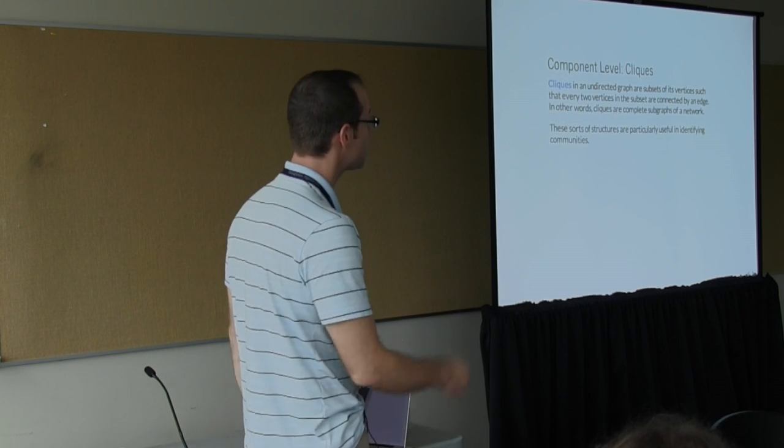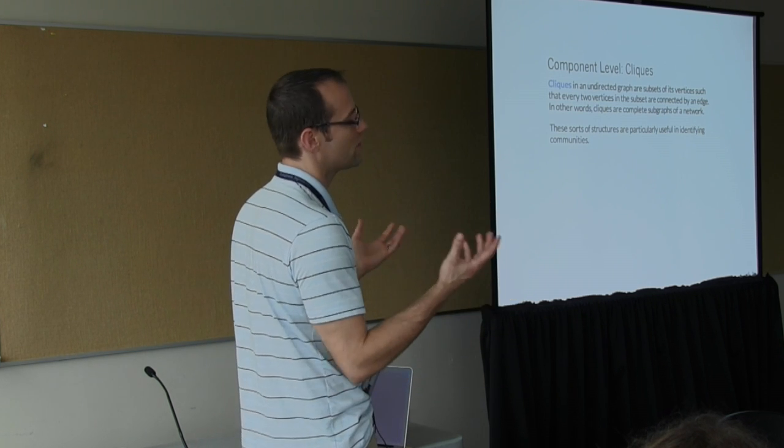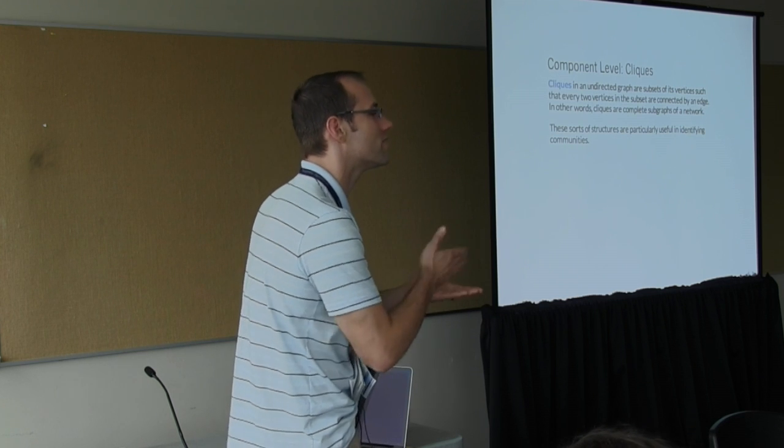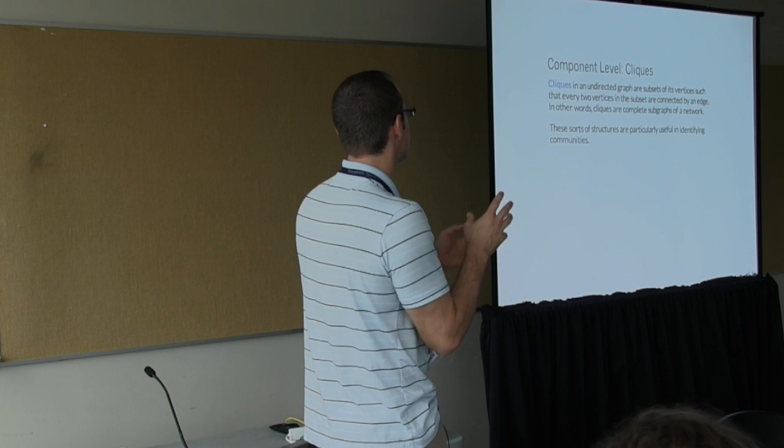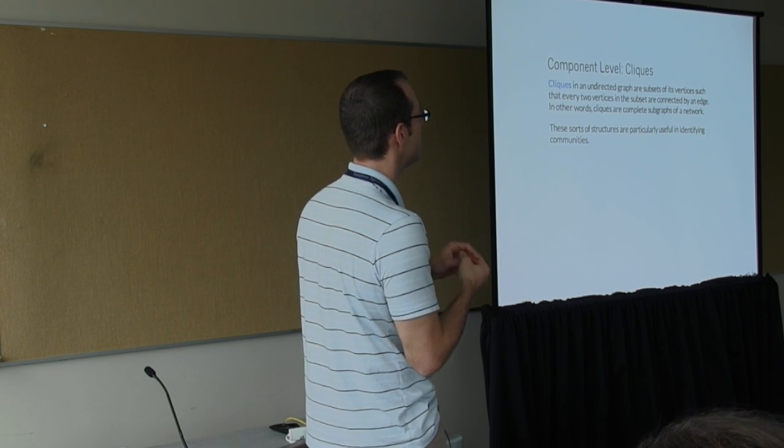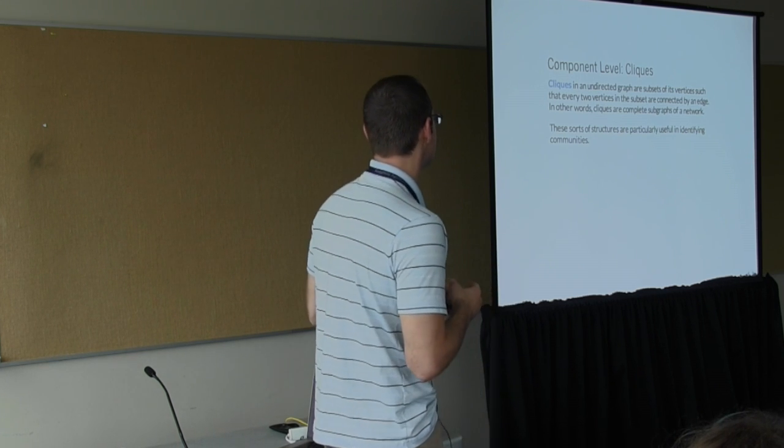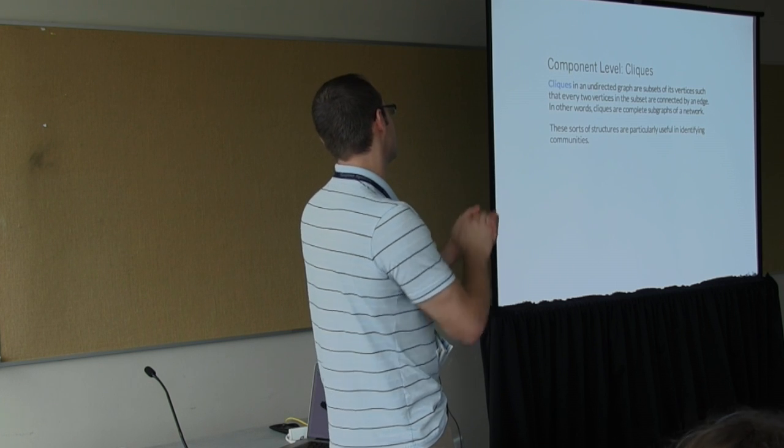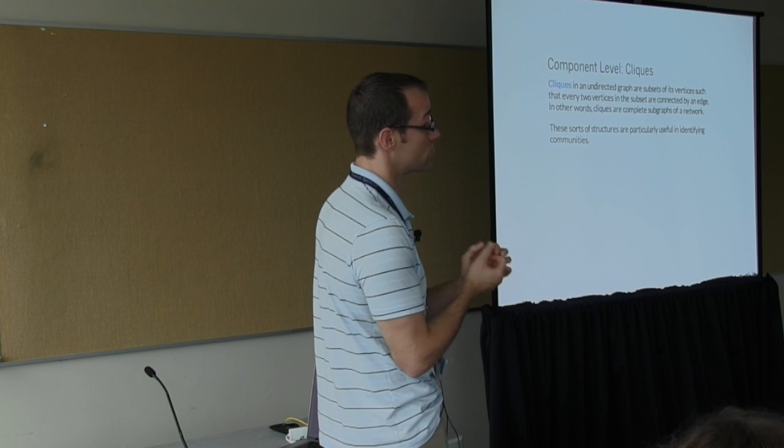And as I mentioned before, cliques are, in an undirected graph at least, there are lots of different notions depending on which encoding of a graph you're looking at. The most basic case, it's a subset where its vertices are connected, interconnected, maximally interconnected. So they're complete sub-graphs in the network.